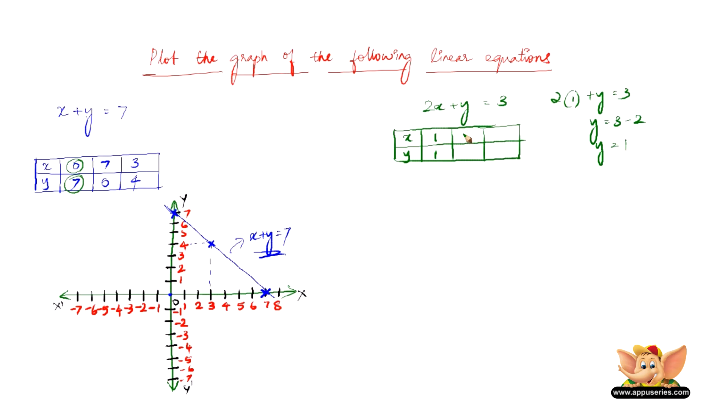So if x is 2, then 2 into 2 is 4, so 4 minus 1 gives us 3, so y should be minus 1. And if x is minus 1, that makes it 2 into minus 1 is minus 2. Minus 2 plus 5 gives us 3, so y should be 5. So we've got our three solutions here.